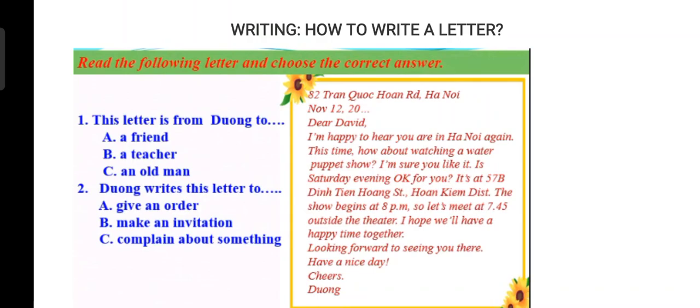Now, number two. Dương writes this letter to: A, give an order; B, make an invitation; C, complain about something. What do we choose? Number two — B, make an invitation.